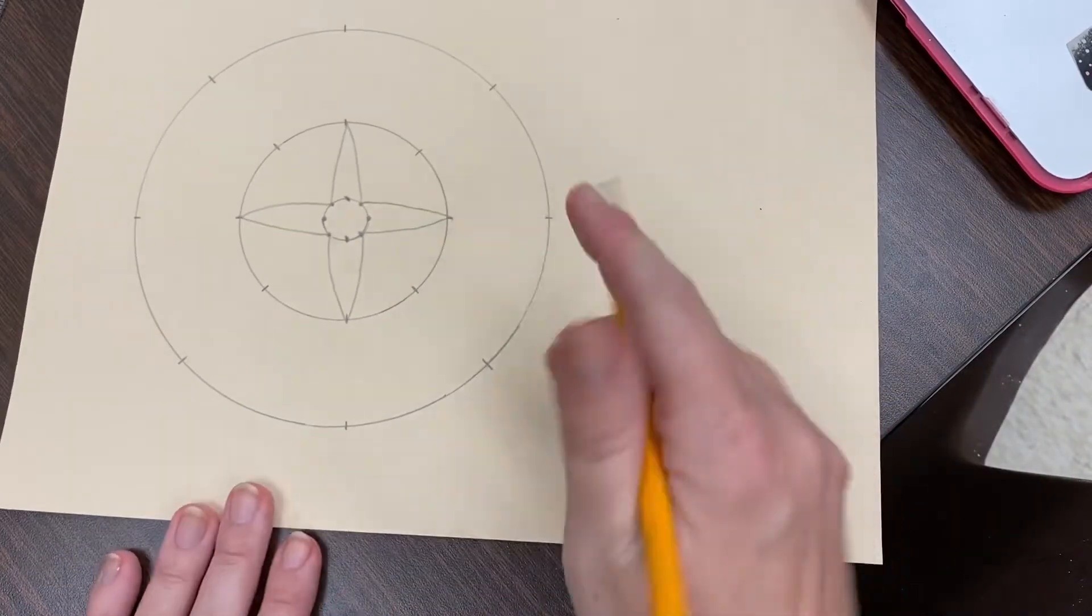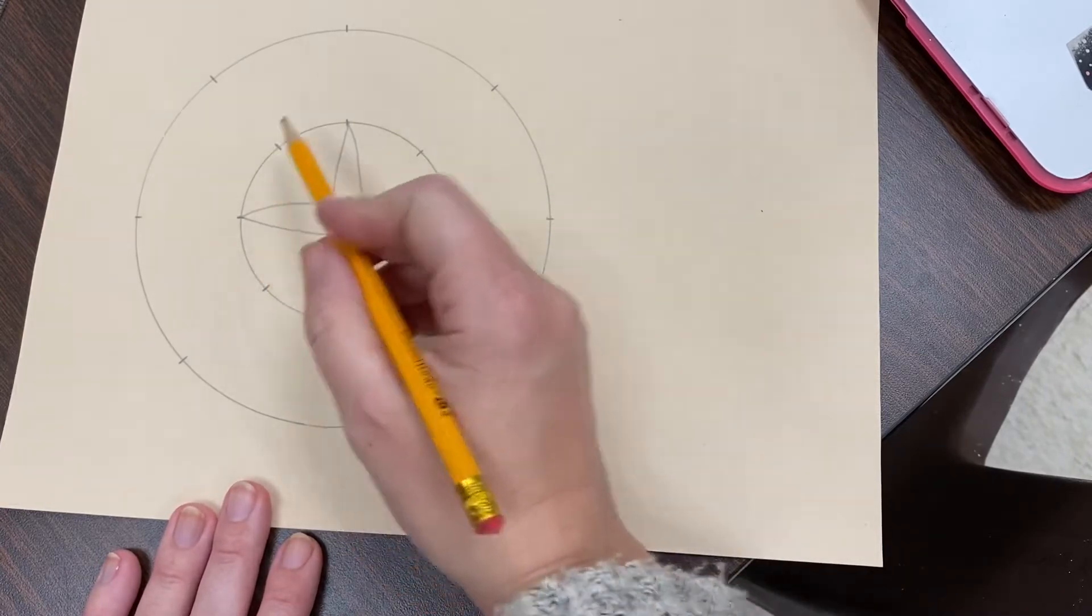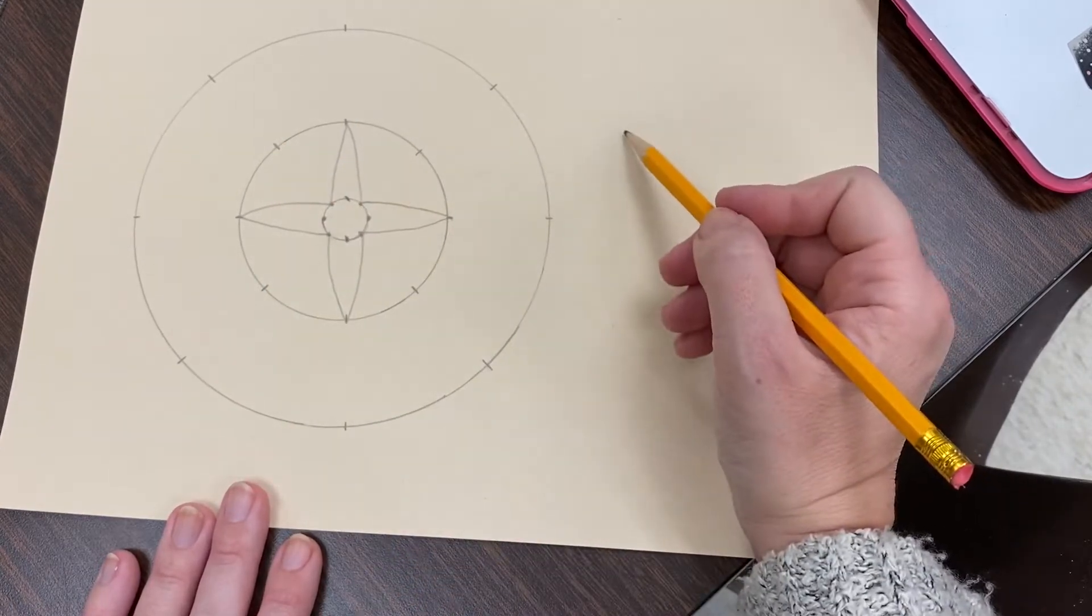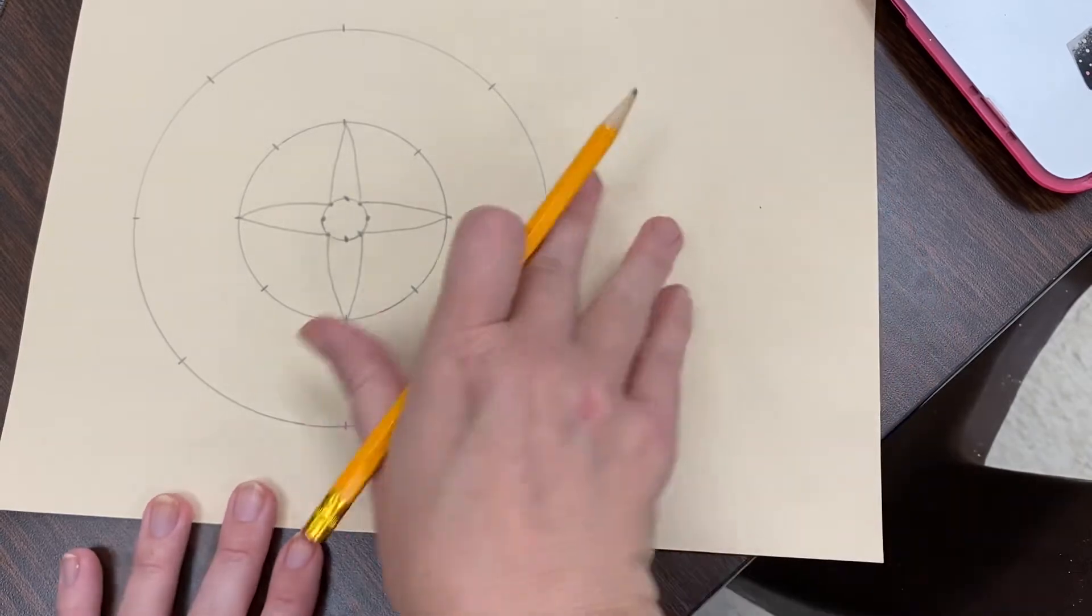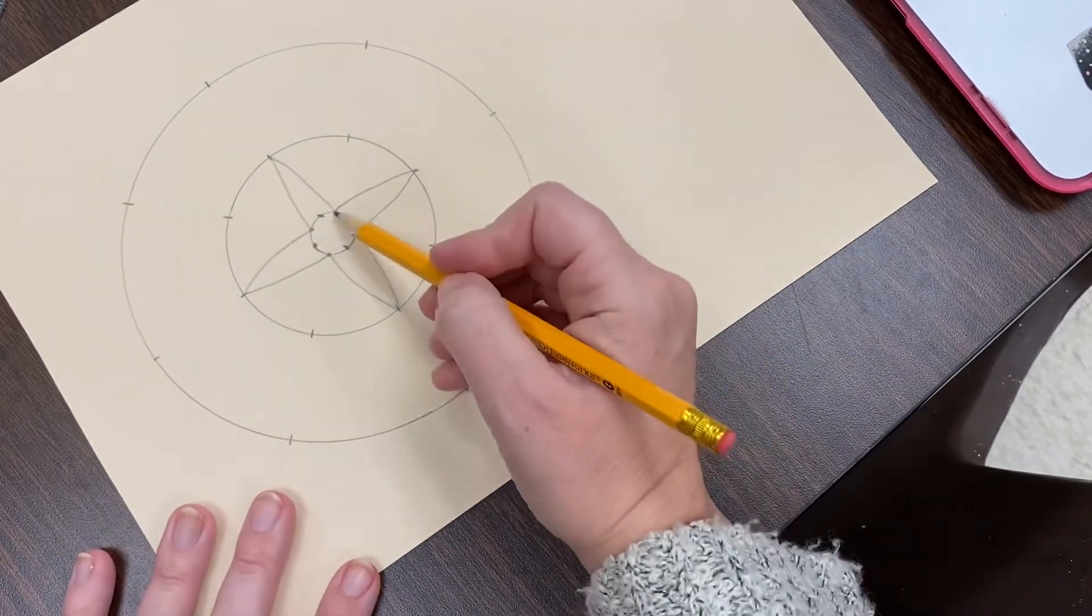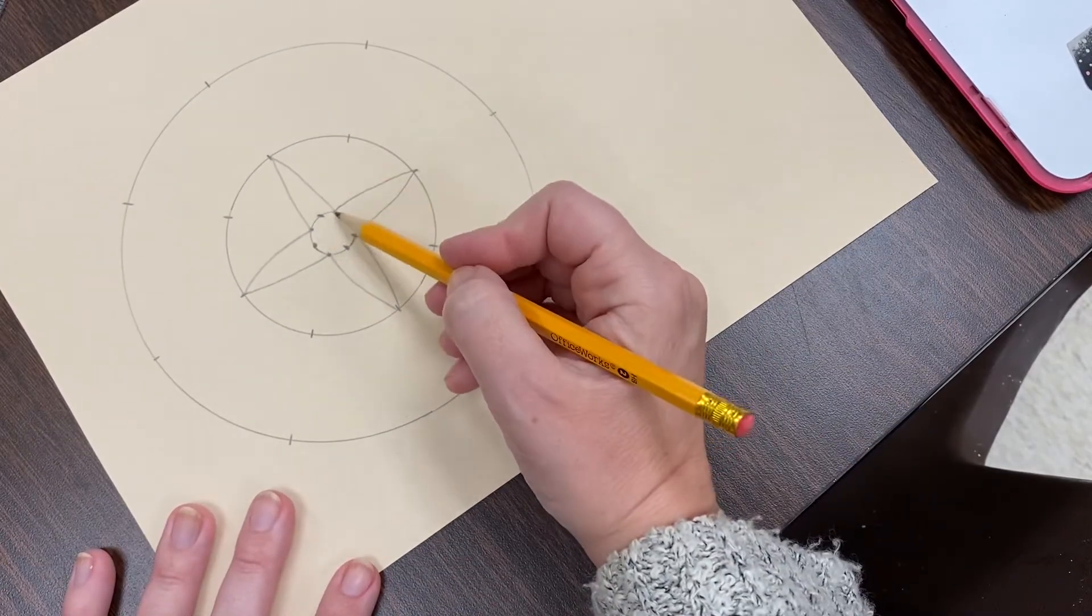Now, I still have one, two, three, four lines that haven't been touched. I can do the same thing and I'll get kind of a cool overlapping effect.